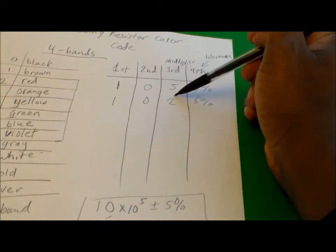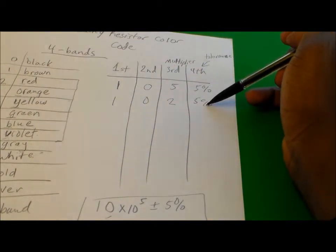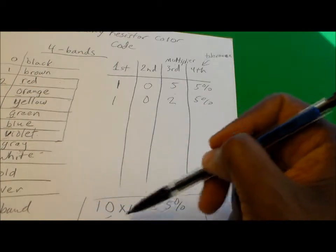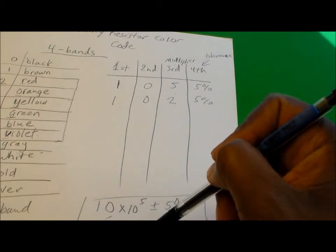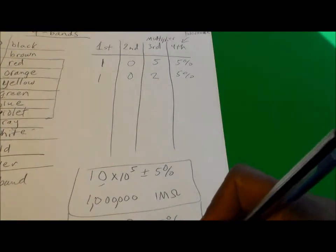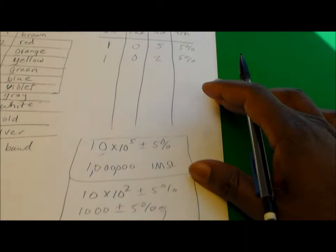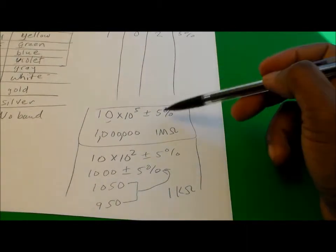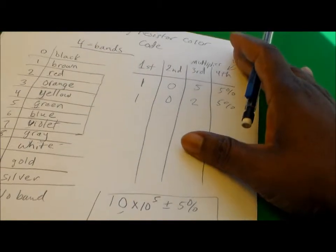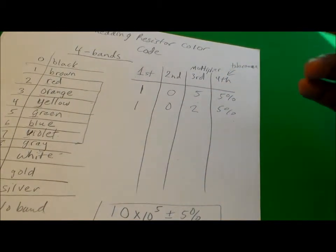These are the color codes, and then you read them: first band, second band, the multiplier band, and the tolerance band. Then use that information to calculate what your resistor value is. This is a 1 megaohm and this is a 1 kilohm resistor. That's how you'd go about interpreting the color codes on a four-band resistor.